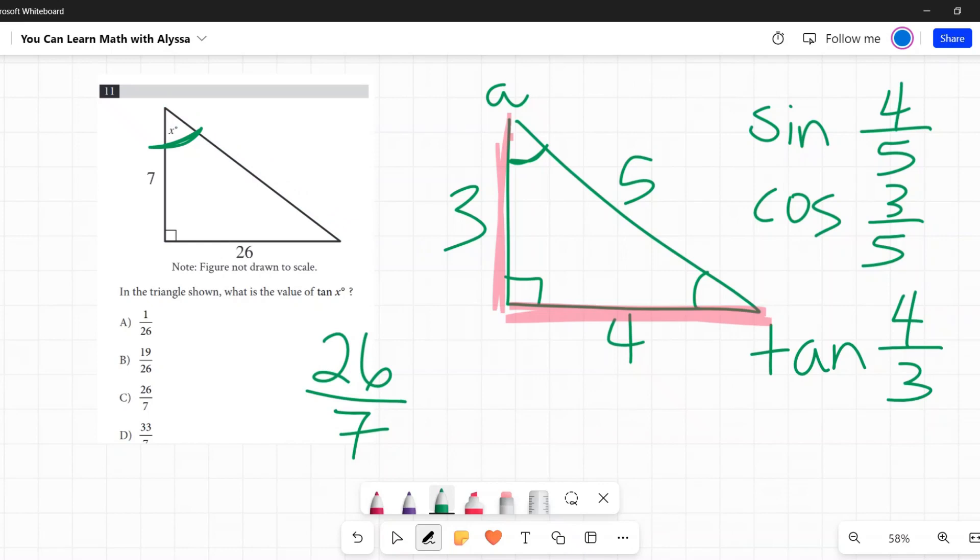That's all you need to do, is identify that they're asking for tangent, opposite over adjacent. And so that would be C, 26 over 7.